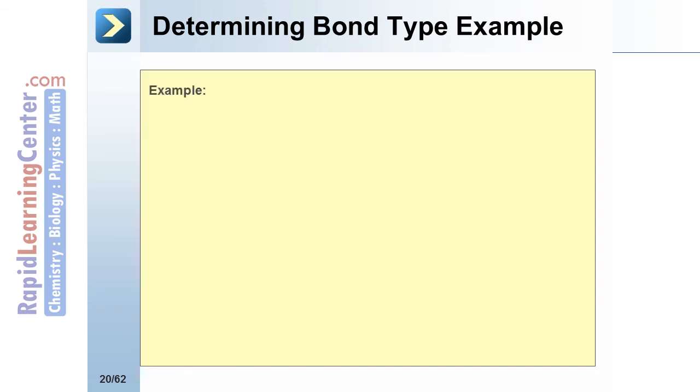Watch three examples of determining the bond type. Potassium and oxygen. This is a metal and a nonmetal. It will be ionic bonding.